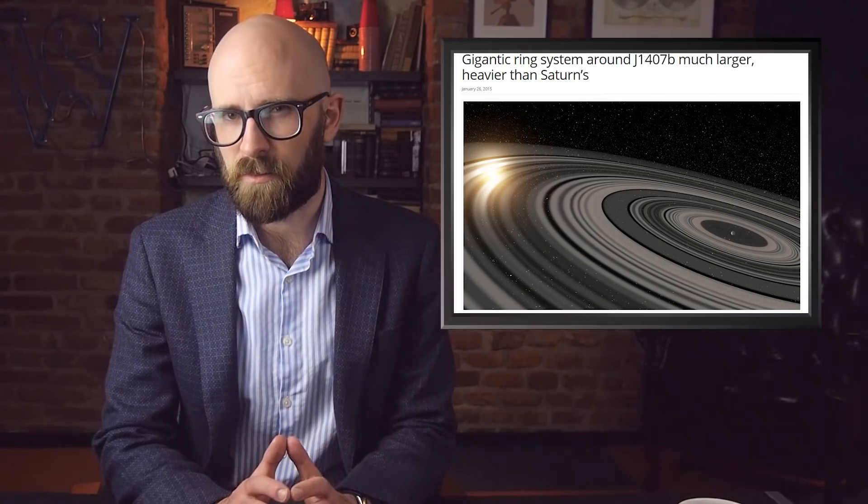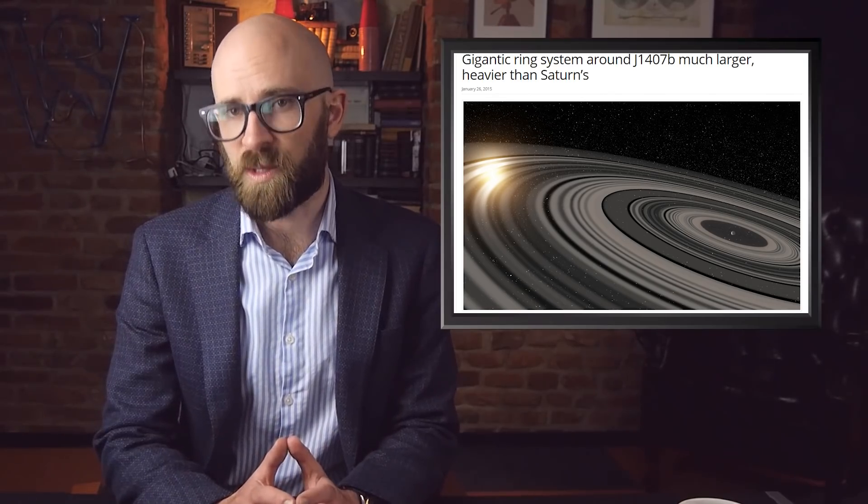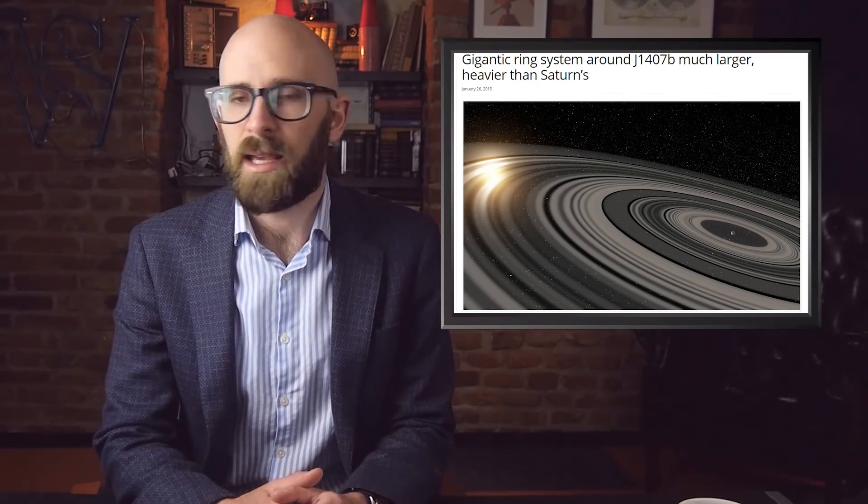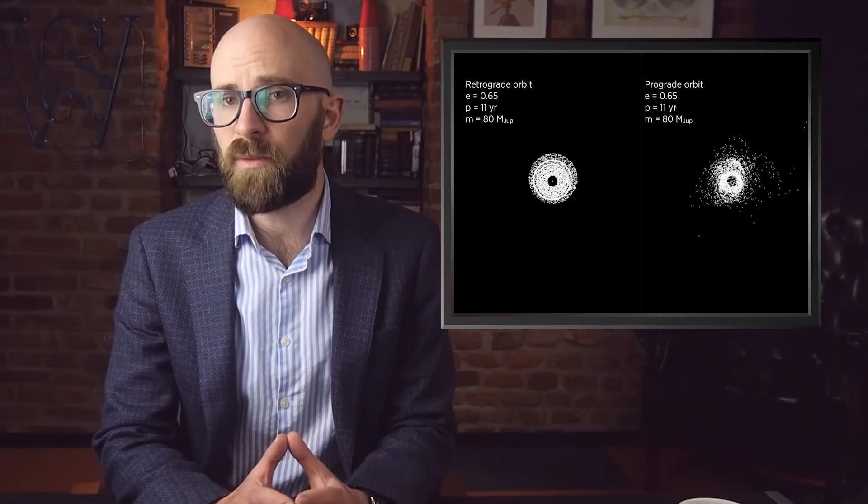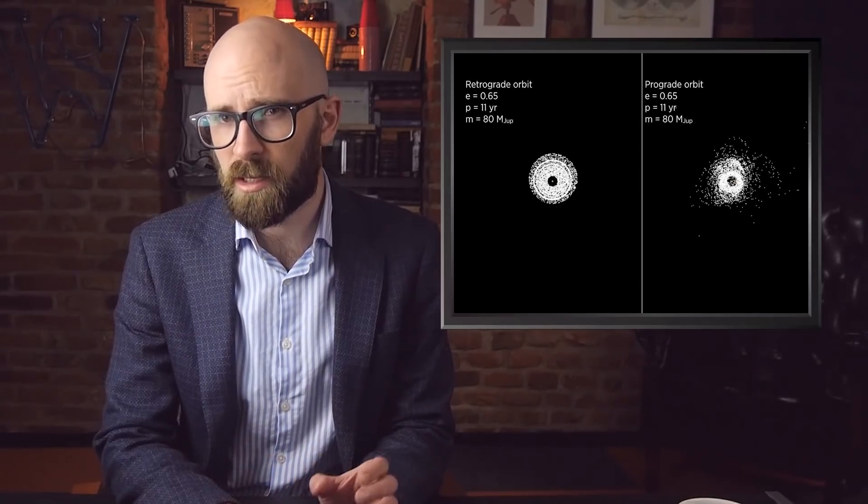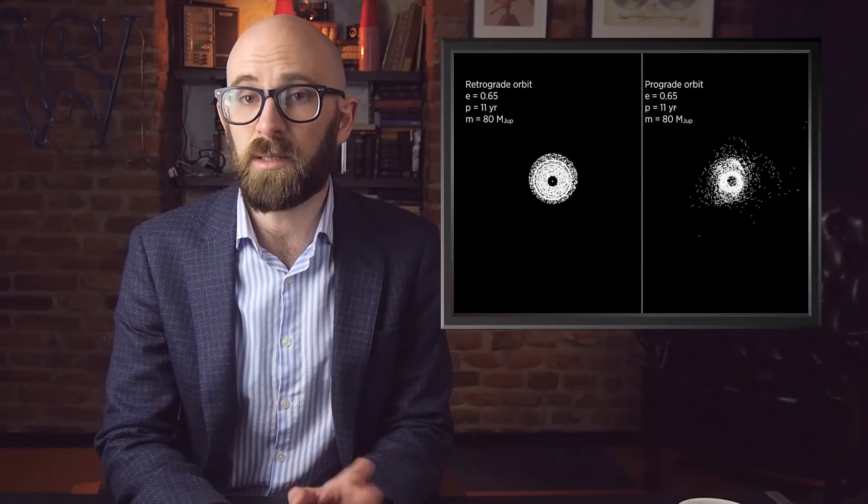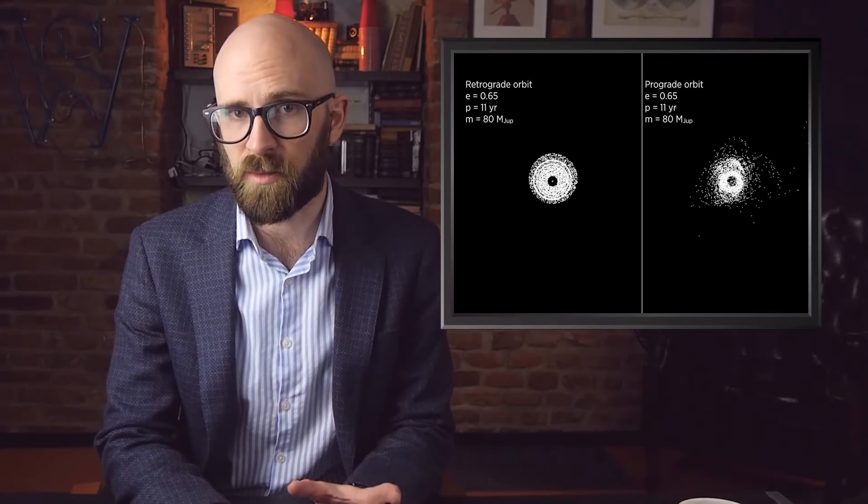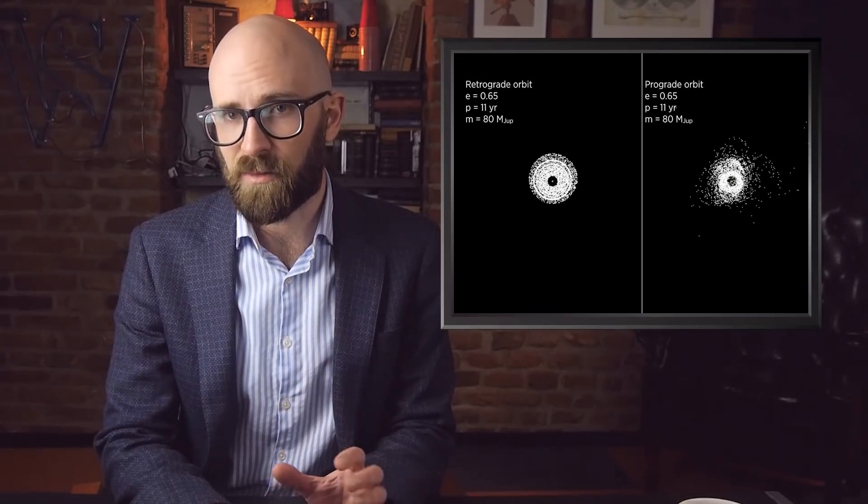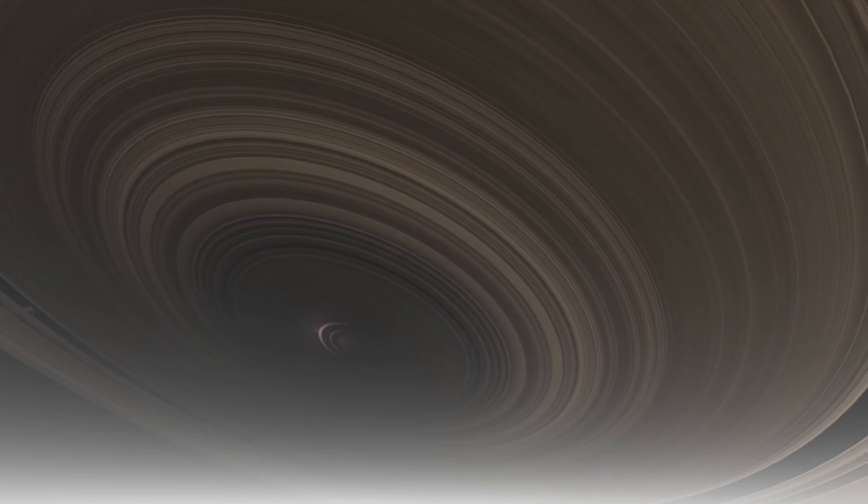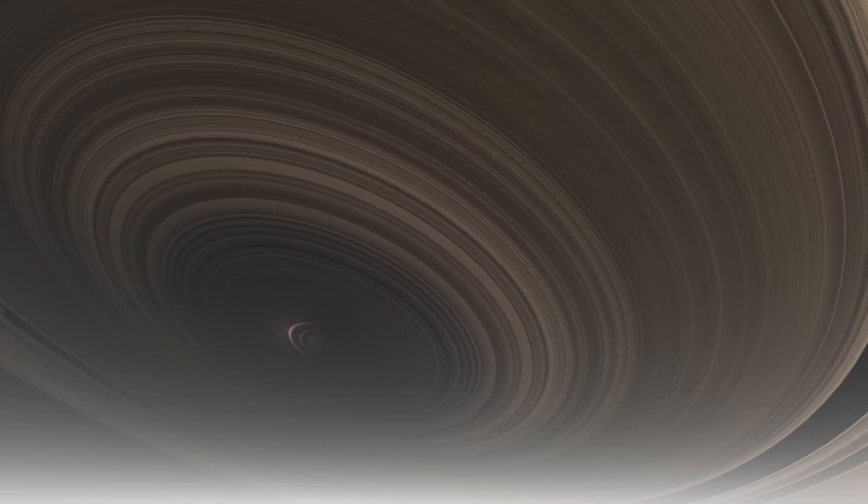The first ring system discovered outside of our solar system, J1407b, was first discovered in the year 2012. J1407b is not actually an exoplanet at all, rather a brown dwarf star. It's encircled by over 30 rings. Each of those rings is tens of millions of kilometers in diameter. Taken all together, the whole ring system is 200 times larger than Saturn.